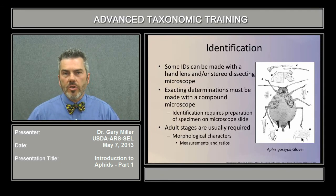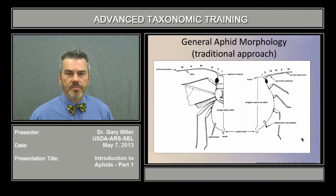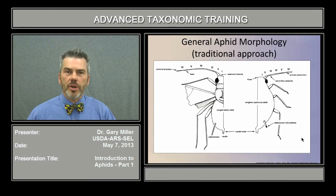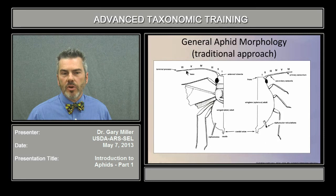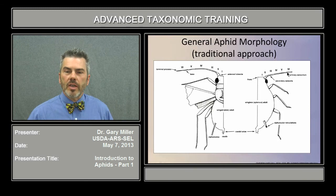Also required are measurements and ratios. If you're going to get into aphid identification, you're going to have to make measurements and use these for ratios. Some of this will be covered under the module for the lucid identification tool. General aphid morphology reflects a traditional approach as found in a printed key or book. Important characters include the terminal process and its associated base on antennal segment 6, an antennal tubercle shown in the head region, the siphunculus, cauda, and its associated seedy. Keys often rely on the presence or absence of secondary sensoria, or rhinaria, and occasionally the primary sensoria located on the 6th antennal segment.